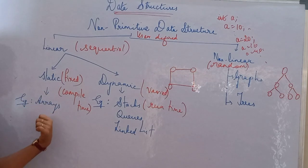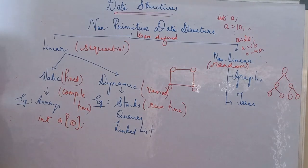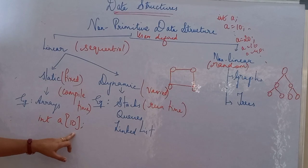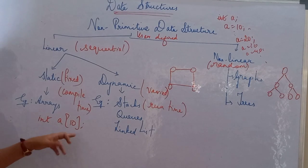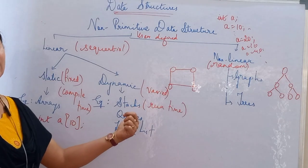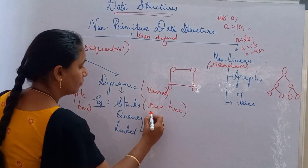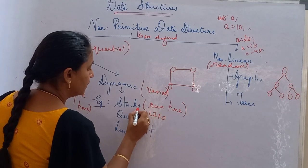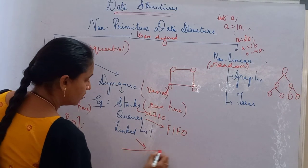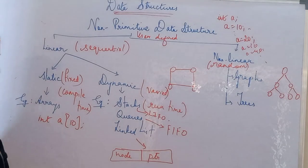For an array, for example you declare 'int A[10]' — this variable A is going to hold 10 elements. After fixing the value, we cannot change its size. For stack, queue, and linked list, the same principle applies but we can change the size. Stack works under the concept of Last In First Out (LIFO). Queue works under the concept of First In First Out (FIFO). Linked list works under the concept of node and pointer representation.